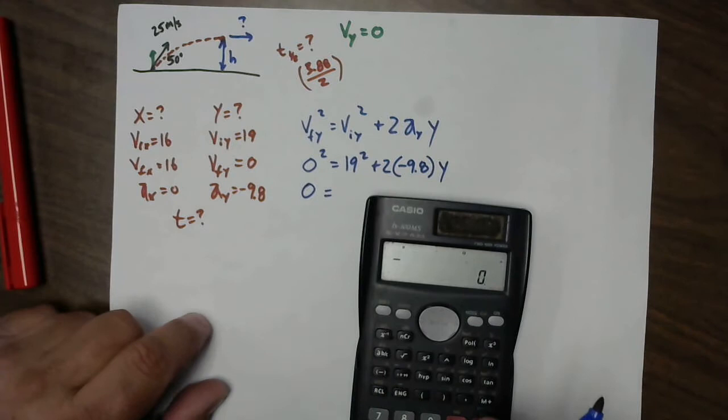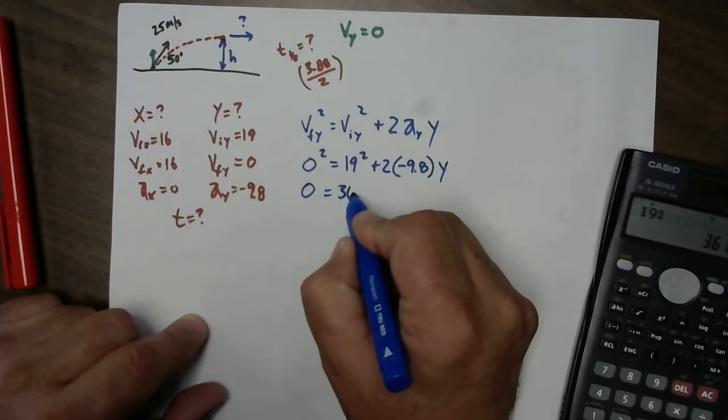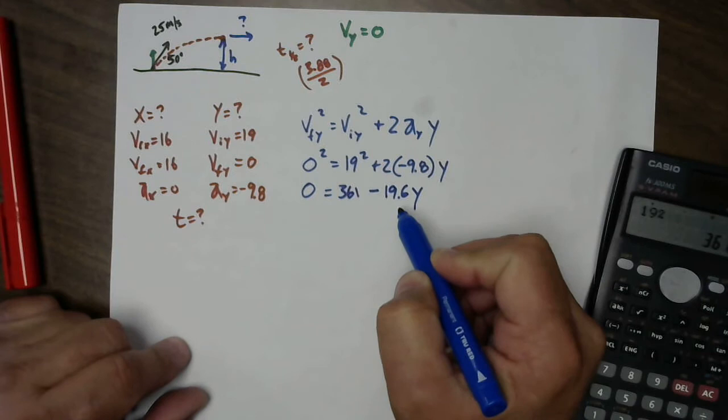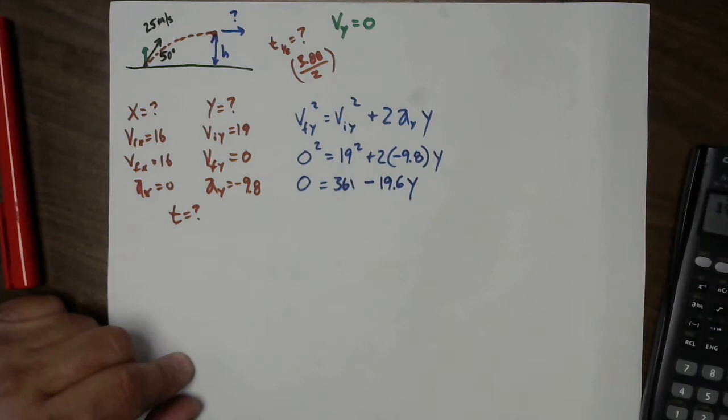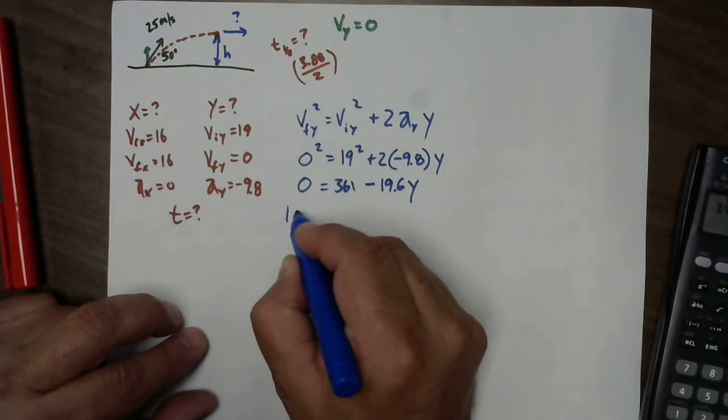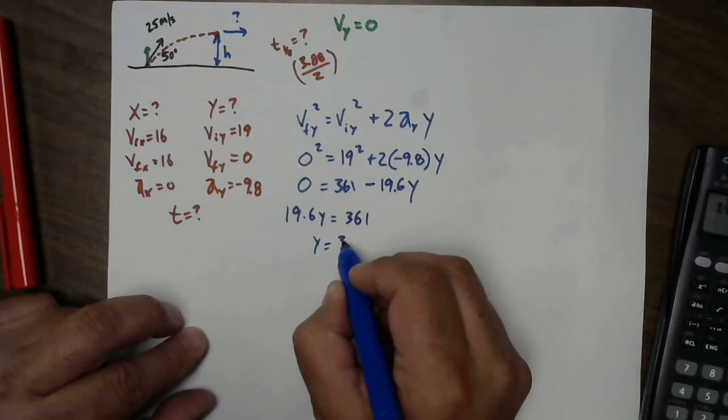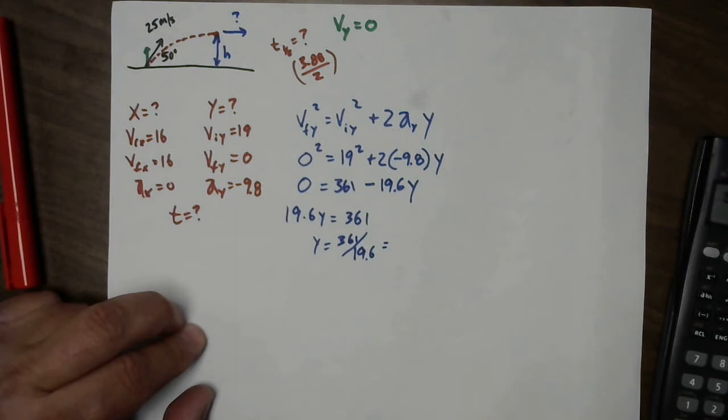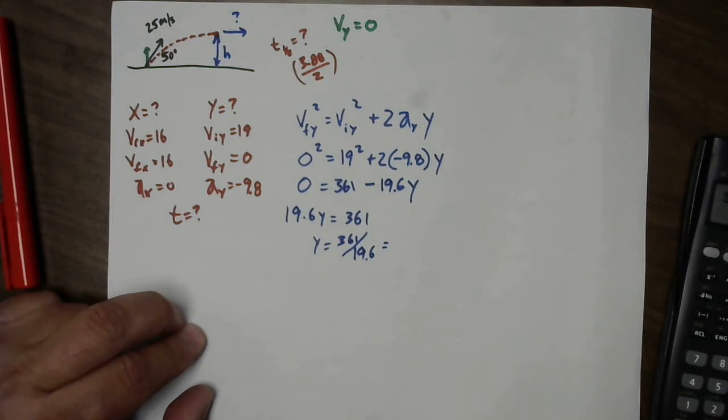So 0 = 361 − 19.6y. Moving terms: 19.6y = 361. Therefore y = 361 ÷ 19.6 = 18.4 meters. That's the maximum height.